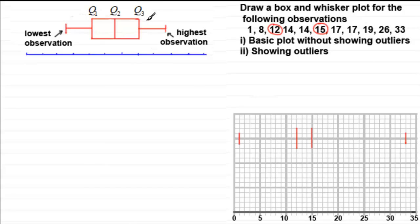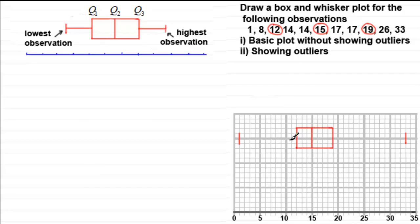Now we need our upper quartile. We have five values to the right of the median. Adding 1 gives 6, divide by 2 gives 3 — we're looking for the third value in that list, which is 19. So 19 is our upper quartile. We mark in all three quartiles, complete the box, and draw in the lines called the whiskers — hence the name box and whisker plot.